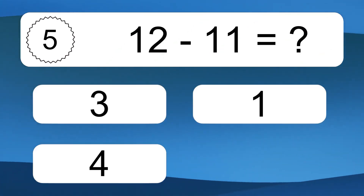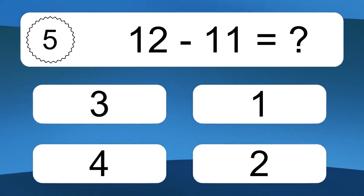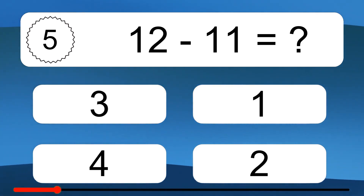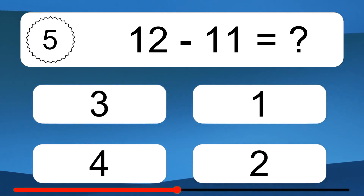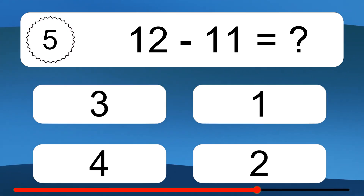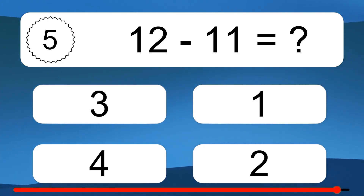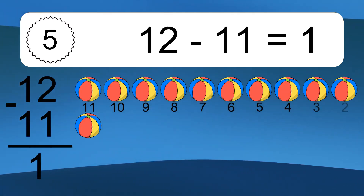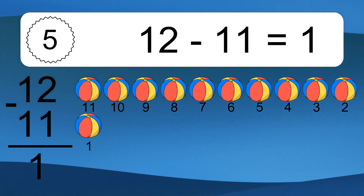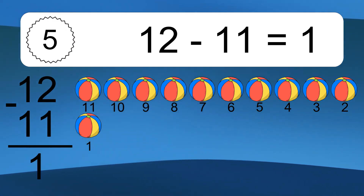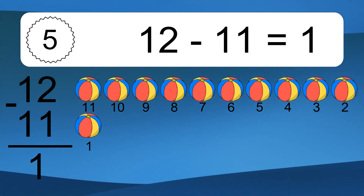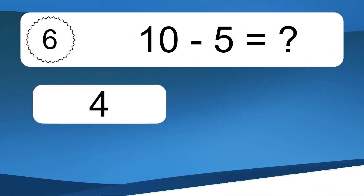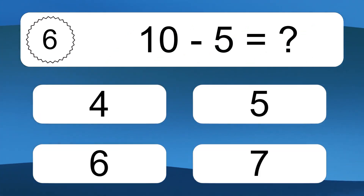12 minus 11 equals what? 12 minus 11 equals 1. Let's count it: 11, 10, 9, 8, 7, 6, 5, 4, 3, 2, 1. 10 minus 5 equals what?